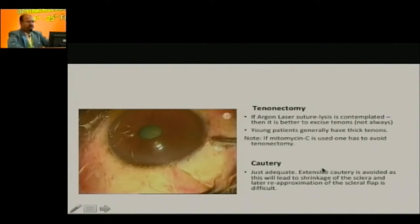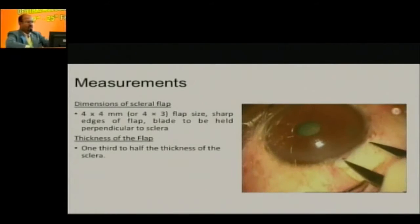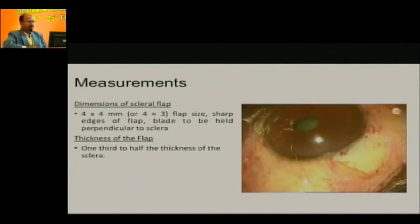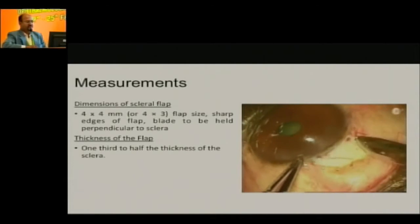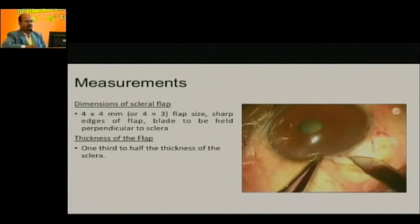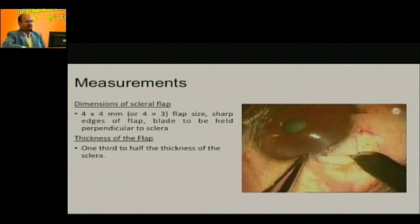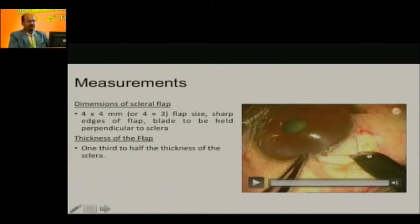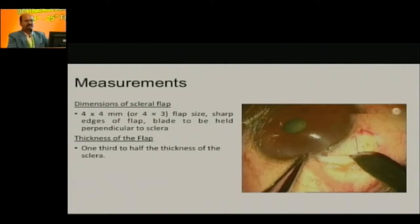Young patients have thick tenons, so you have to anticipate whether you are going to use a releasable suture or fixed suture and then do argon laser suture lysis. If you are not comfortable doing a releasable suture, better do a tenonectomy so that the suture is visible through the thin conjunctiva. Take proper measurements when you make the flap — four by four, four by three, or even five by five if you have sufficient space. The cut should be perpendicular to the sclera and partial thickness. For very low IOP targets, make a one-third thickness flap; for angle closure, a two-third thickness flap. The bevel of the 15-number blade serves as an indirect gauge of flap depth.